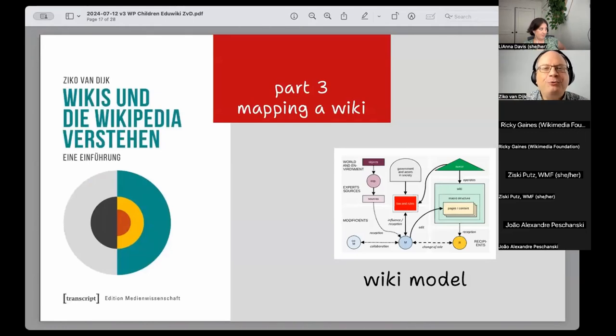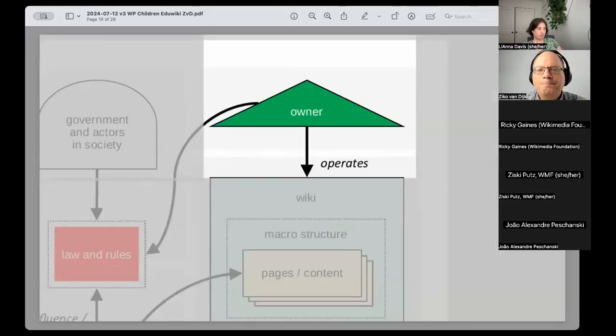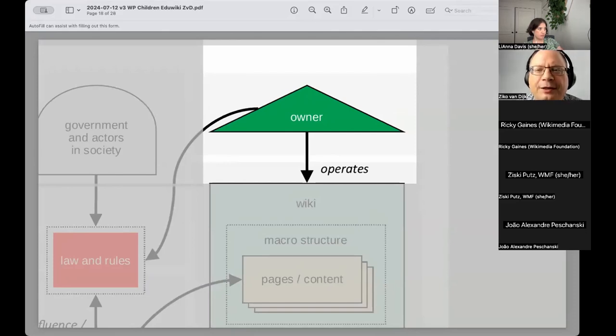Dear friends of free knowledge, let's move on to mapping, which I promised to you. For this task, I like to use my wiki model from my book, because I want to know what a wiki consists of and what questions you can ask when it comes, for example, to children. The wiki model is intended to provide an overview. And I have a first chapter from my book in English, translated on my user page on English Wikipedia, if you want. I can give you a link later.